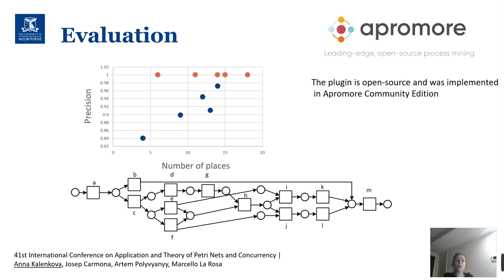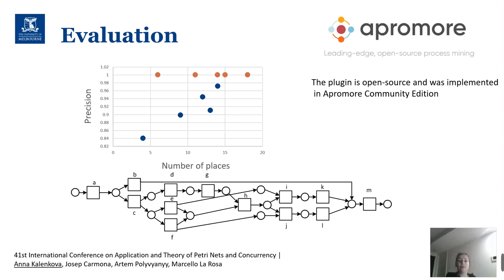We implemented our approach in the ProM framework, ProM Community Edition, and tested it using a set of simple models. We generated event logs for non-free-choice models, then removed some places to make these models free choice, and applied our technique. In the resulting plot, orange dots represent repaired models and blue dots represent free choice models. Precision for orange models is better, while blue models are more compact as they contain fewer places. There is always a trade-off between simplicity of a model and its precision.